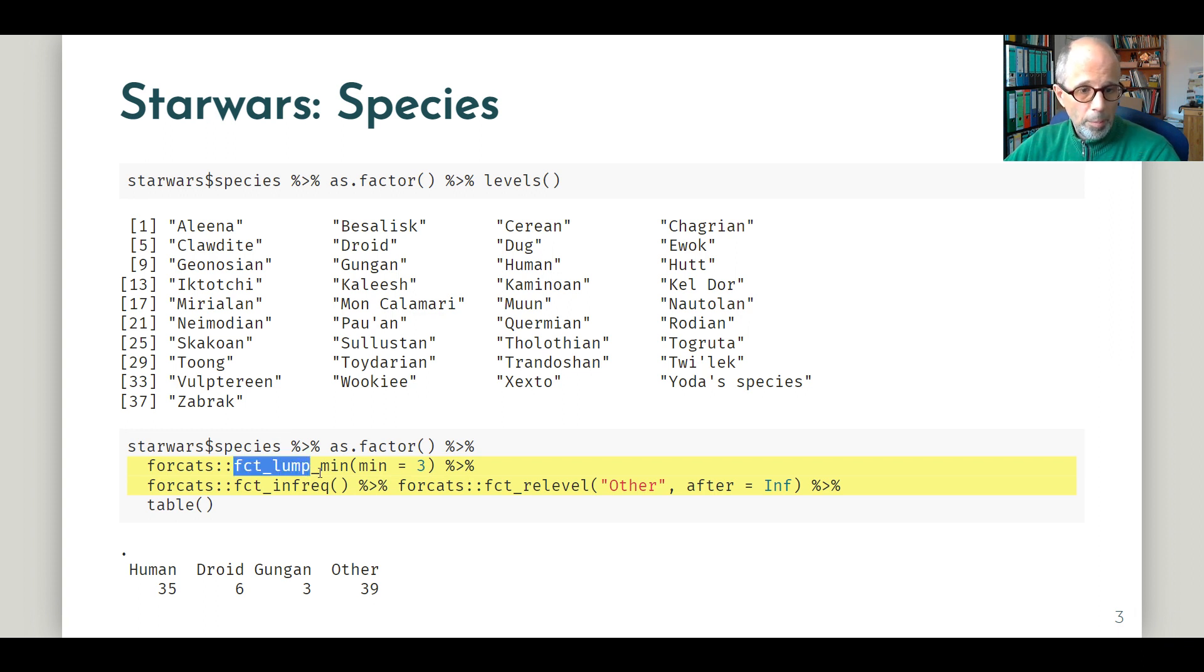fct_lump_min allows us to very conveniently recode the species so that all species that don't appear at least three times are summed up as others. Then I'm using one more line of code to sort the result by frequency and put the others category at the back of the results.